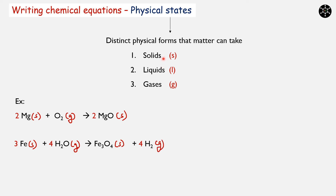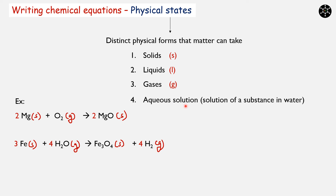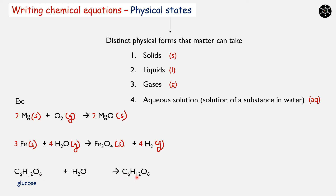Apart from these 3 physical states, there is one more state called aqueous solution, meaning we have a solution of a substance in water. The abbreviation for this is (aq). For example, in the solution of glucose in water: glucose is solid in nature, water is a liquid, and when we have a glucose solution, we represent it as aqueous (aq).